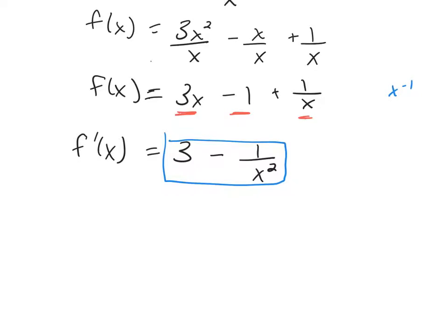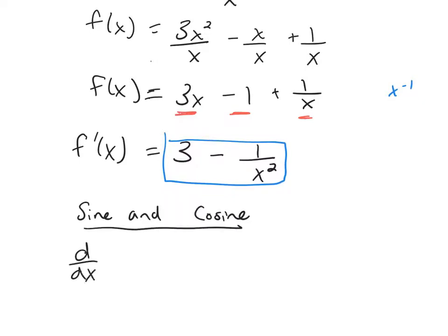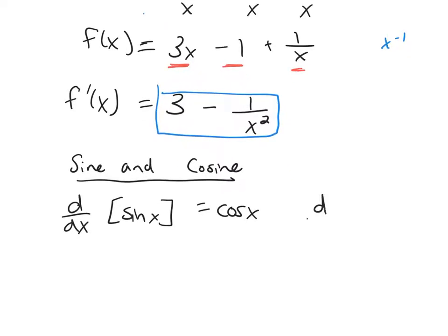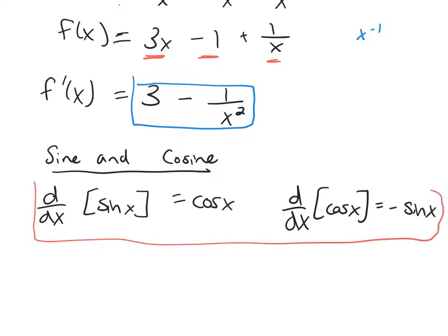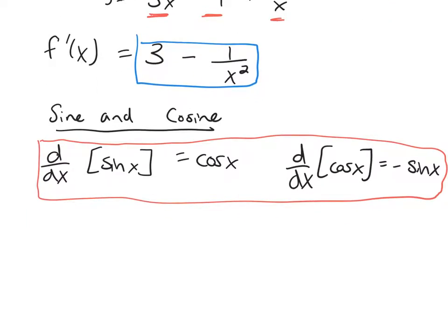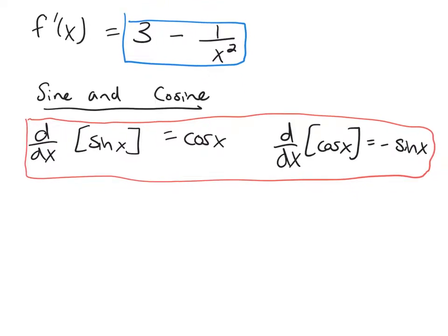Now we're going to introduce derivatives of trig functions, starting with sine and cosine. The derivative of sine is cosine. The derivative of cosine is negative sine. These are two you'll want to remember — the derivative of sine is cosine, and the derivative of cosine is negative sine.